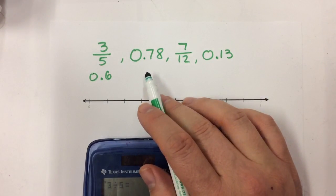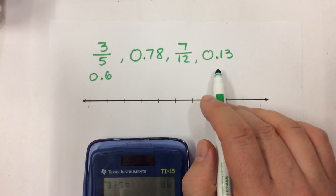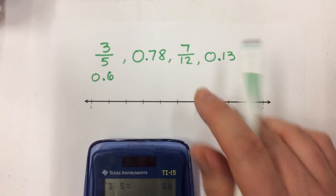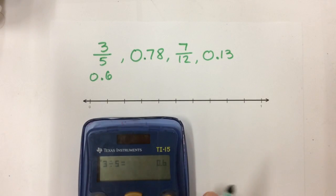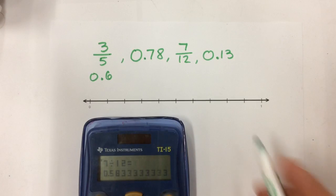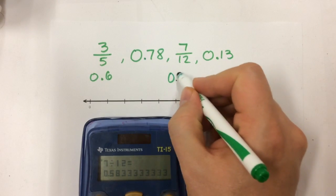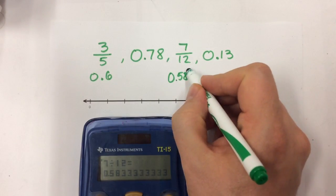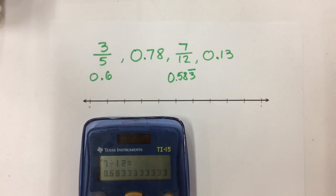This decimal is already done, and this decimal is already done, so what I really need to do is focus on this fraction. I'm going to take my numerator, which is 7, and divide it by the denominator, which is 12, and I'm going to get 0.5833333. I can just put a line over the 3 to say that this 3 goes on forever.